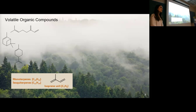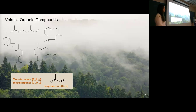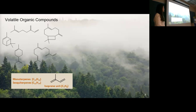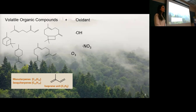Sesquiterpenes can also contribute to the terpene profile in the atmosphere. Abundant sesquiterpenes include beta-caryophyllene, the most abundant. All of these different isomeric species of terpenes can have different reactivities in the atmosphere with respect to oxidants. Depending on their structure and placement of double bonds, they can react differently with oxidants such as hydroxyl radical, nitrate radical, and ozone.